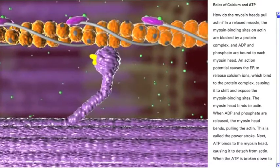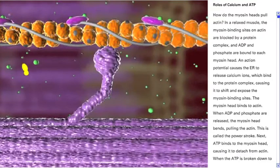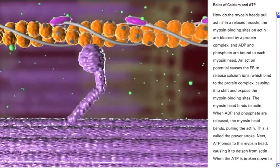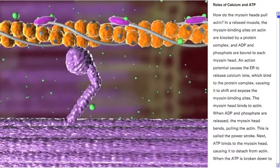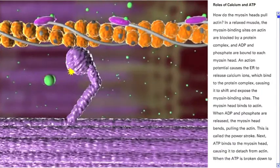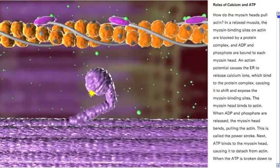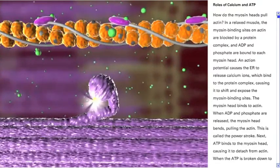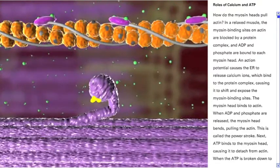When ADP and phosphate are released, the myosin head bends, pulling the actin. This is called the power stroke. Next, ATP binds to the myosin head, causing it to detach from actin. When the ATP is broken down to ADP and phosphate, the myosin head extends.